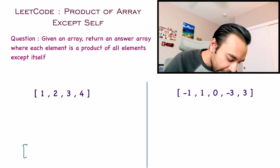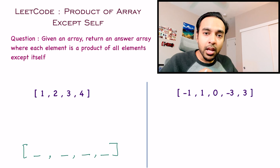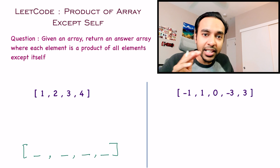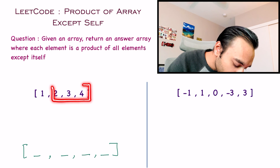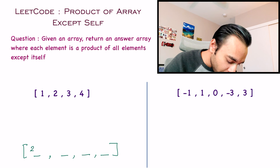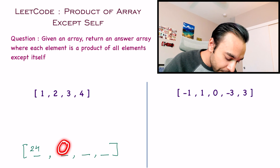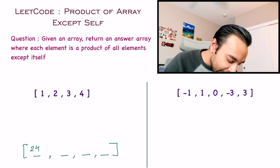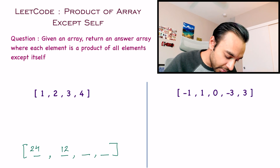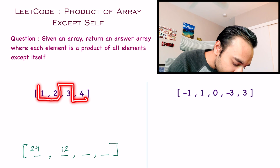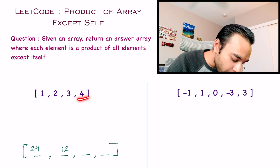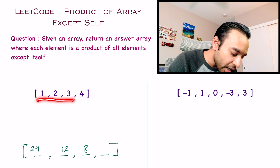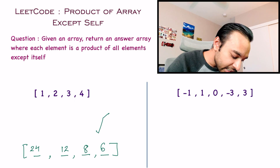Let us look at our first test case. We have an array 1, 2, 3, 4. For the first element, you need the product of all other elements — that is 2 × 3 × 4 = 24. For the second position, you need the product of all elements except 2, so 1 × 3 × 4 = 12. For the third place, you exclude 3, giving 1 × 2 × 4 = 8. For the last place, you exclude 4, giving 1 × 2 × 3 = 6.